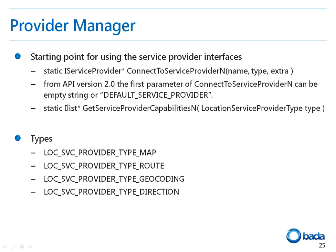If an empty string or the default_service_provider is passed as the first parameter, this method returns the default service provider for the requested service type. The different service provider types supported are MapService, RouteService, GeocodeService, and Direction. If you want to check the capabilities of the service provider, you can use the GetServiceProviderCapabilitiesN API.